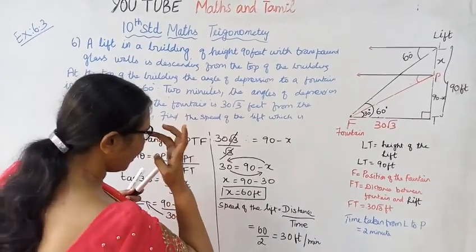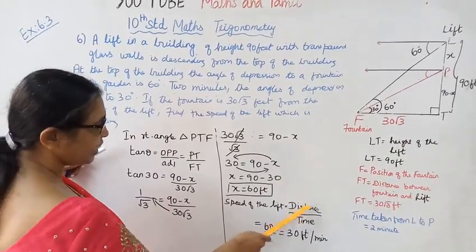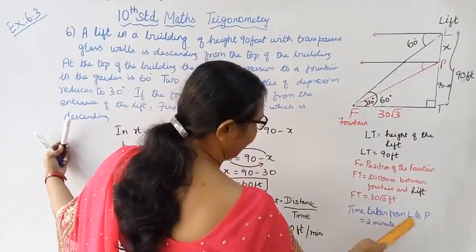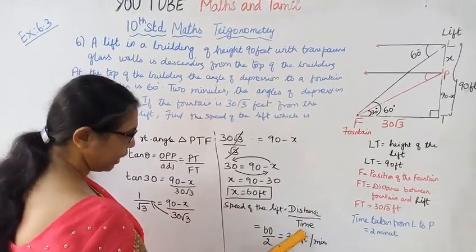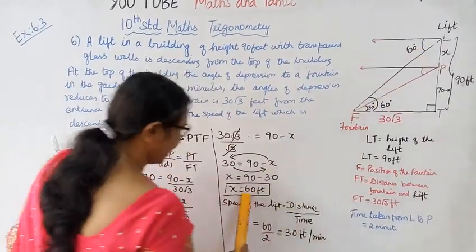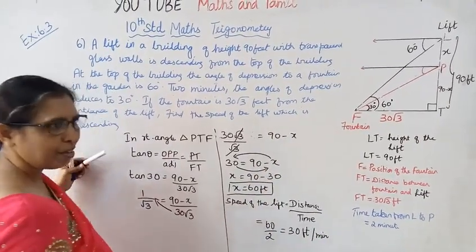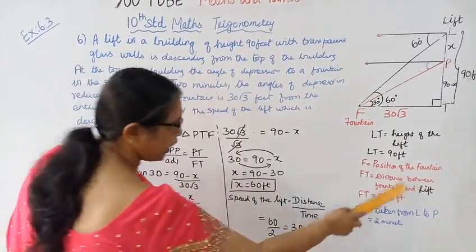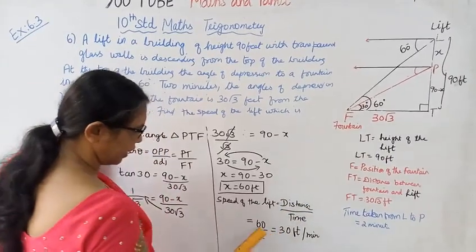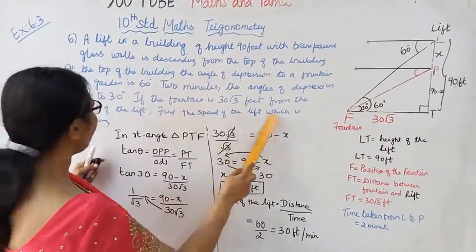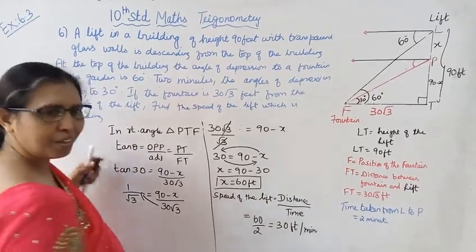Now we need to find the speed of the lift. Speed equals distance over time. The distance is X which we found to be 60 feet. Time is 2 minutes. So speed of the lift equals 60 divided by 2 equals 30 feet per minute. The speed of the lift which is descending is 30 feet per minute.